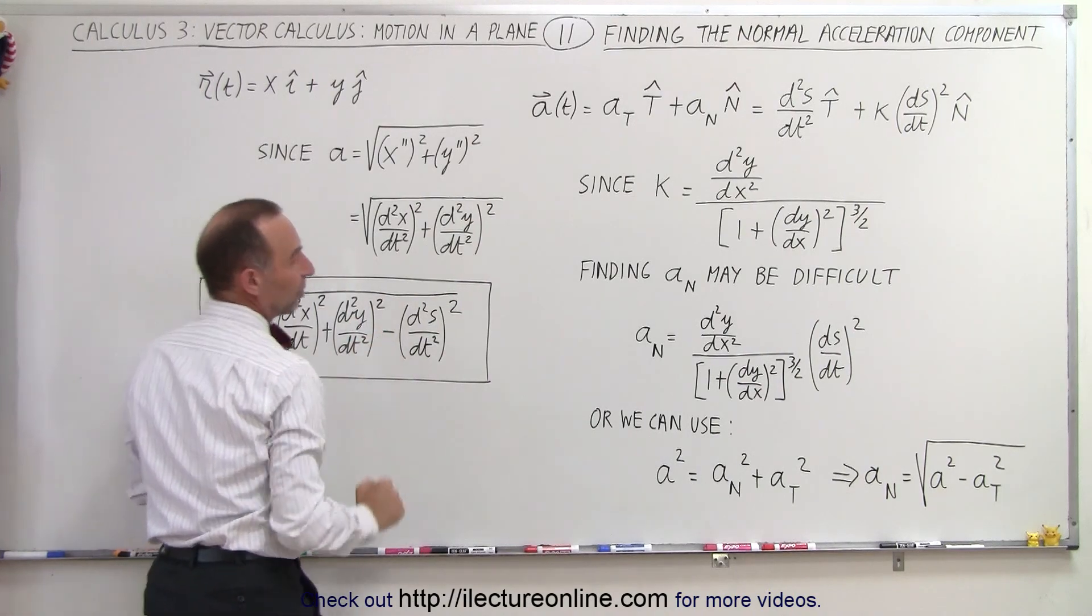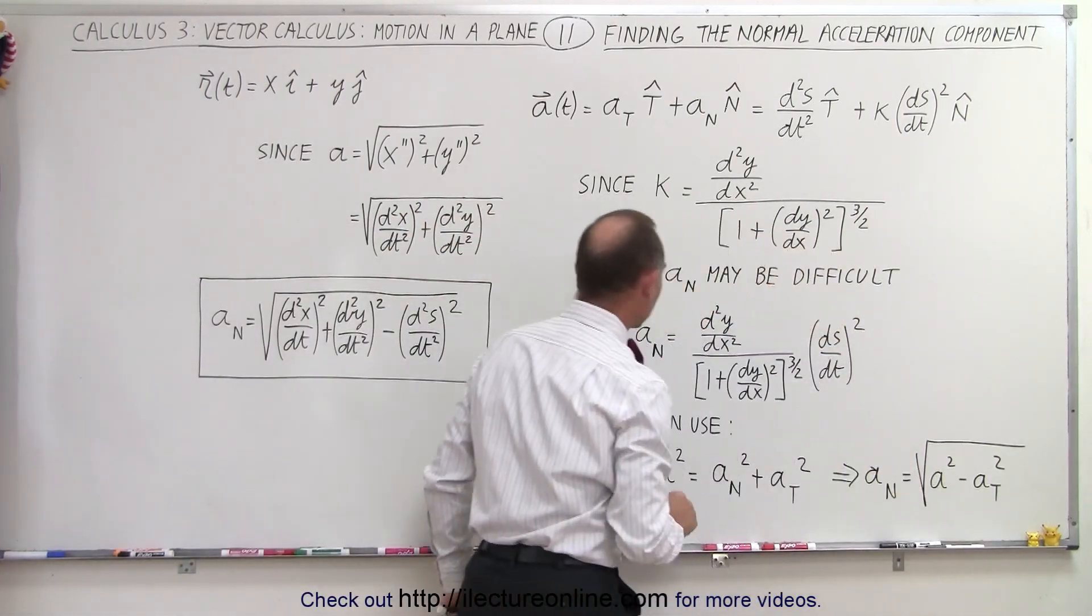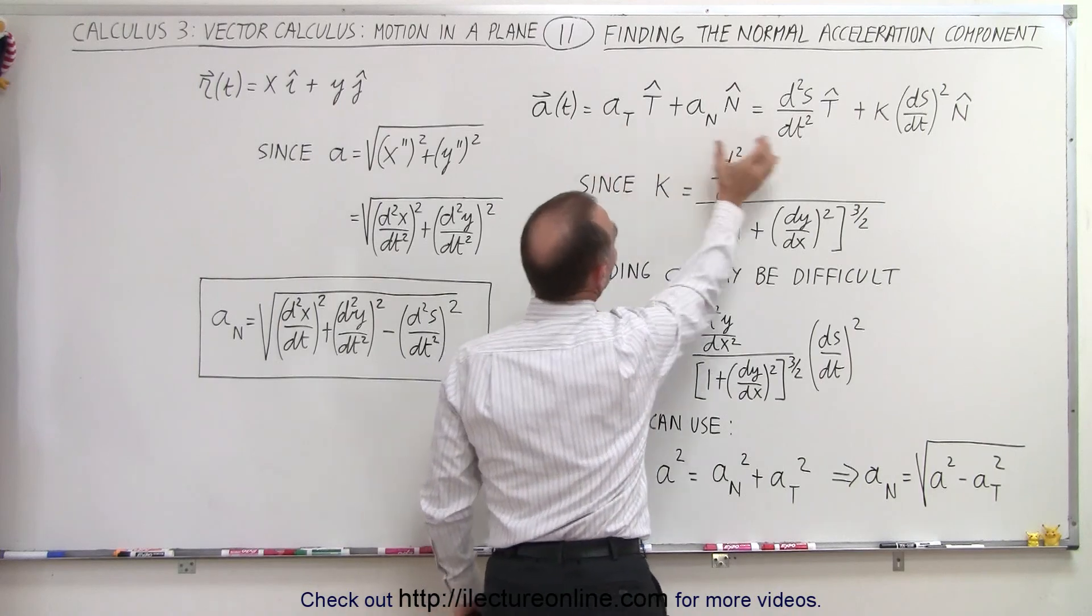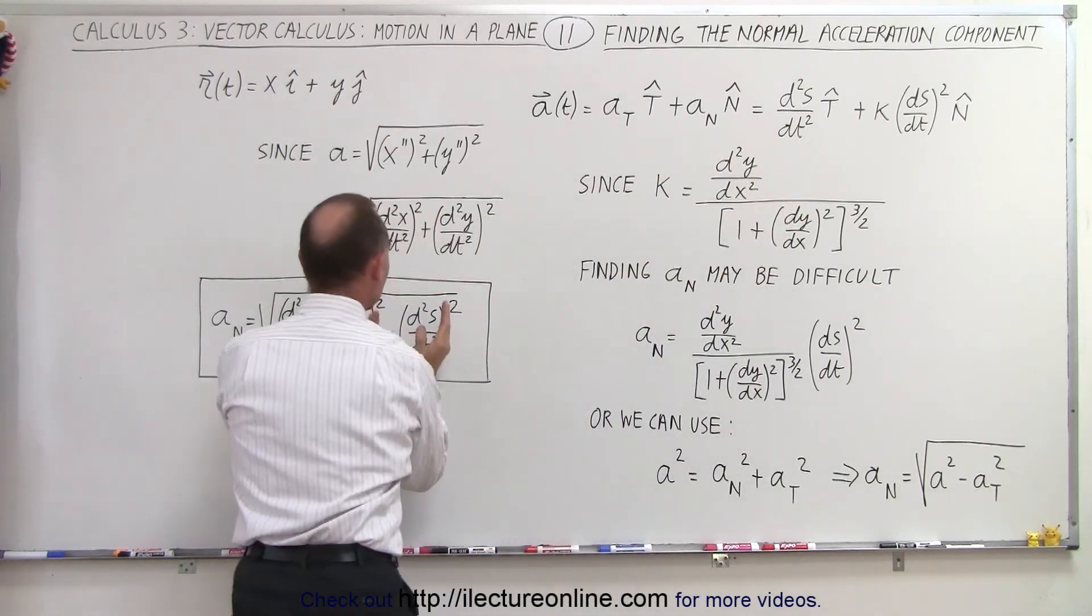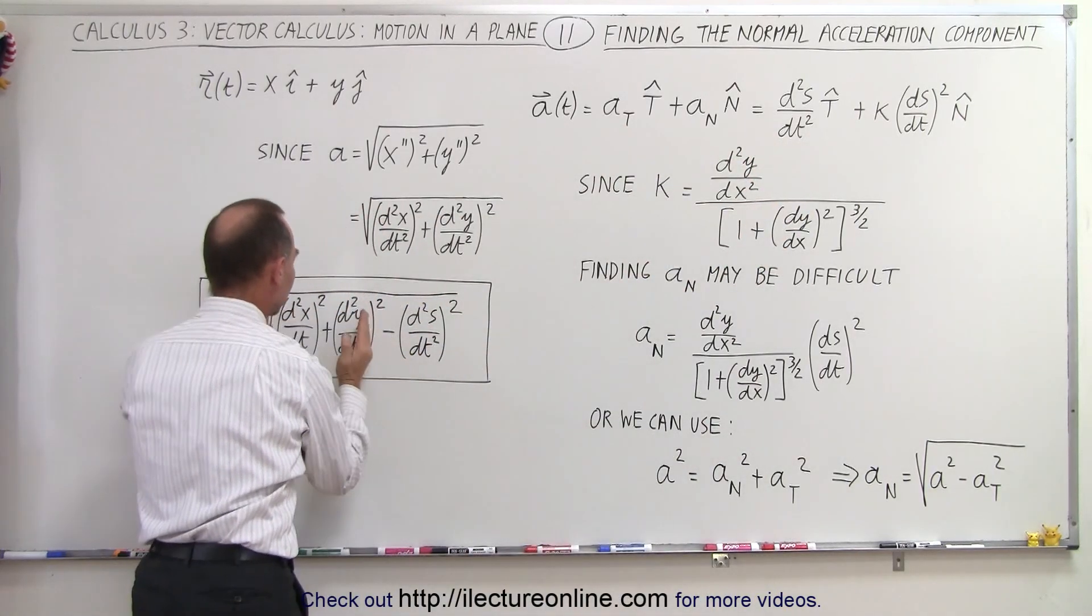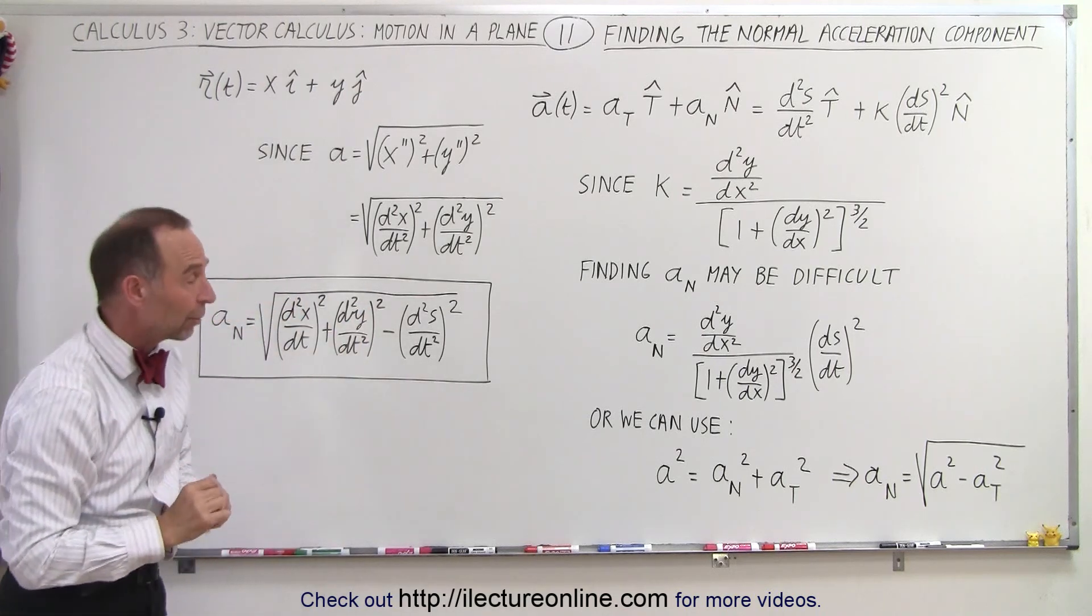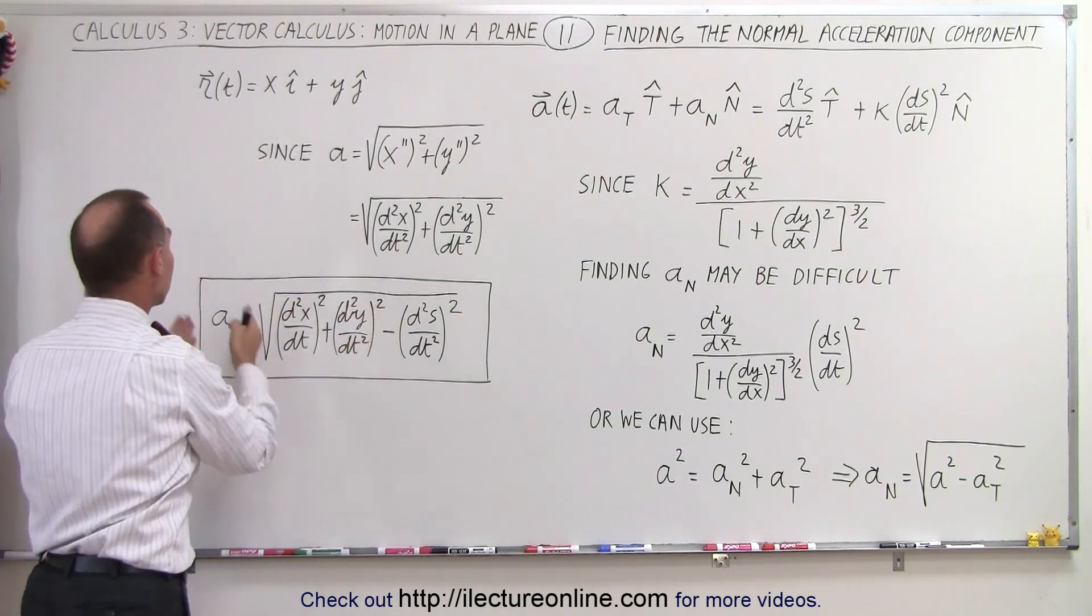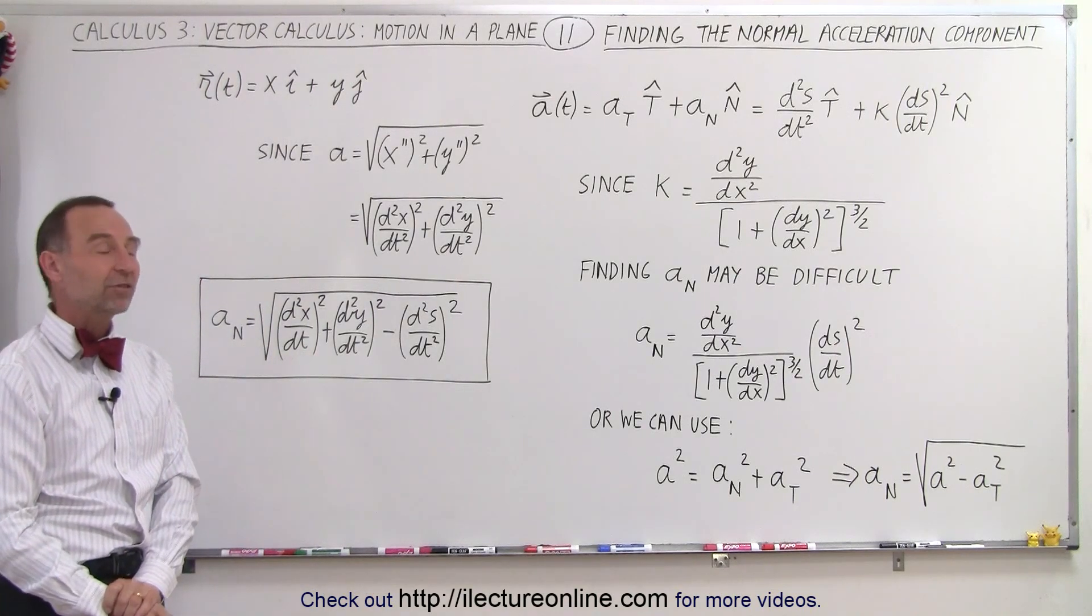Minus the tangential component squared. Now the tangential component right here is this quantity, so we take that quantity and we square it as well and subtract it from the total magnitude of the acceleration, take the square root of that, that gives us the normal component of the acceleration.